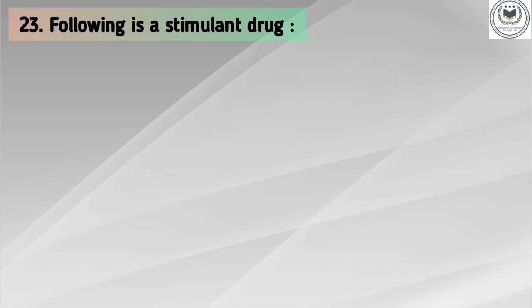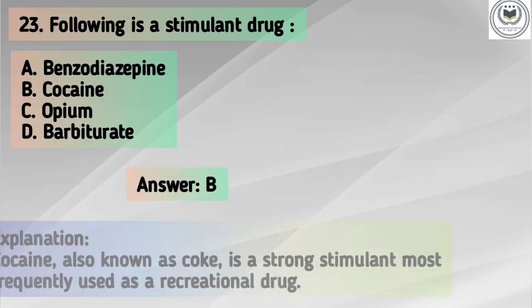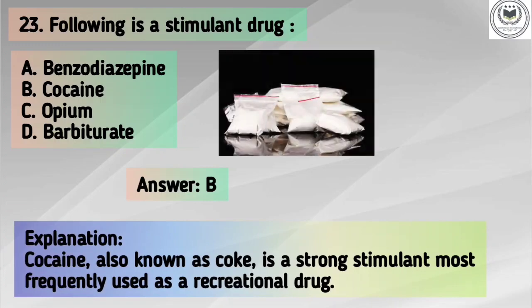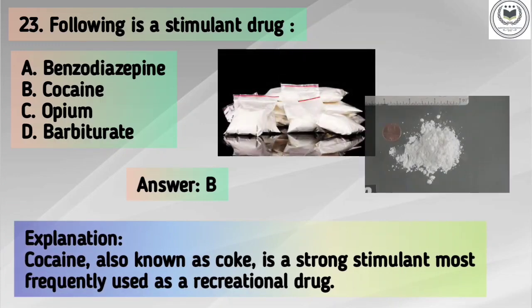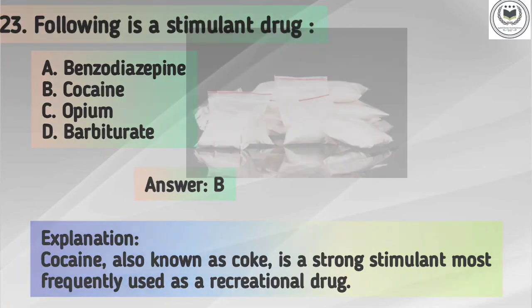Question number 23. The following is a stimulant drug. Options: A. Benzodiazepine, B. Cocaine, C. Opium, D. Barbiturate. Answer is option B, Cocaine. Cocaine, also known as coke, is a strong stimulant most frequently used as a recreational drug.